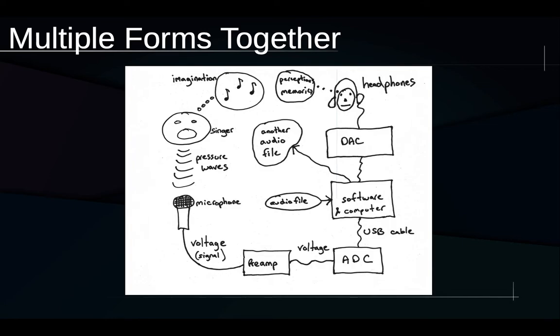So we've seen that sound doesn't only take the form of vibrating air molecules. And what this diagram here shows is, I think, a very typical audio situation. It's someone, I think, who is recording a singer over here. And the point of the diagram is really to underline that in situations where we work with audio, typically, we're managing or paying attention to multiple forms of sound at the same time.